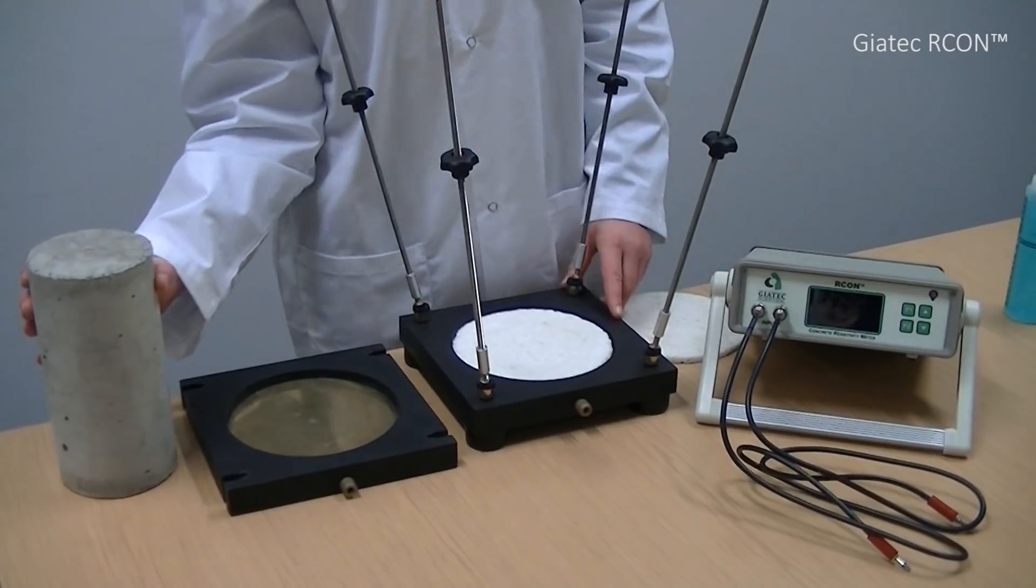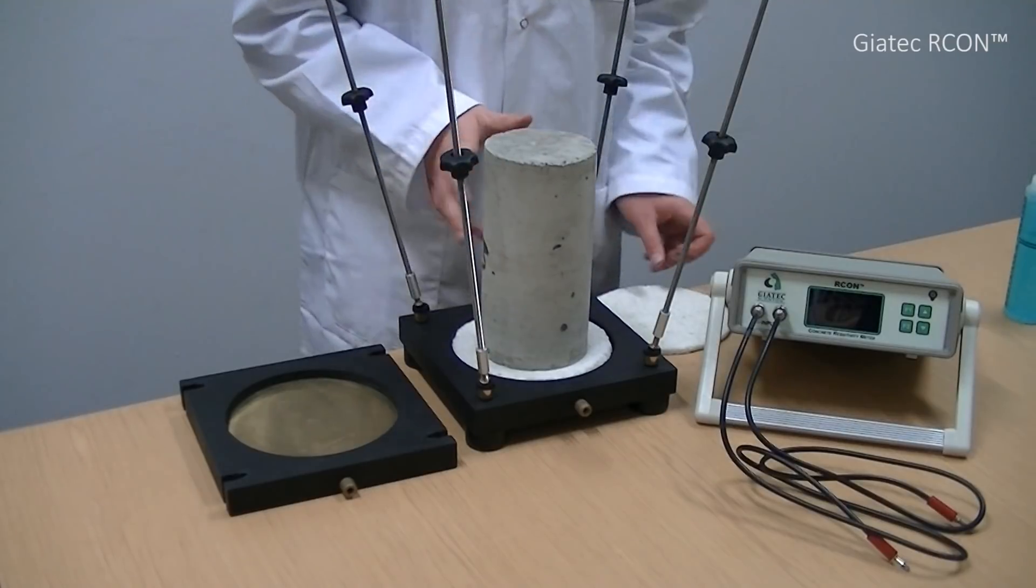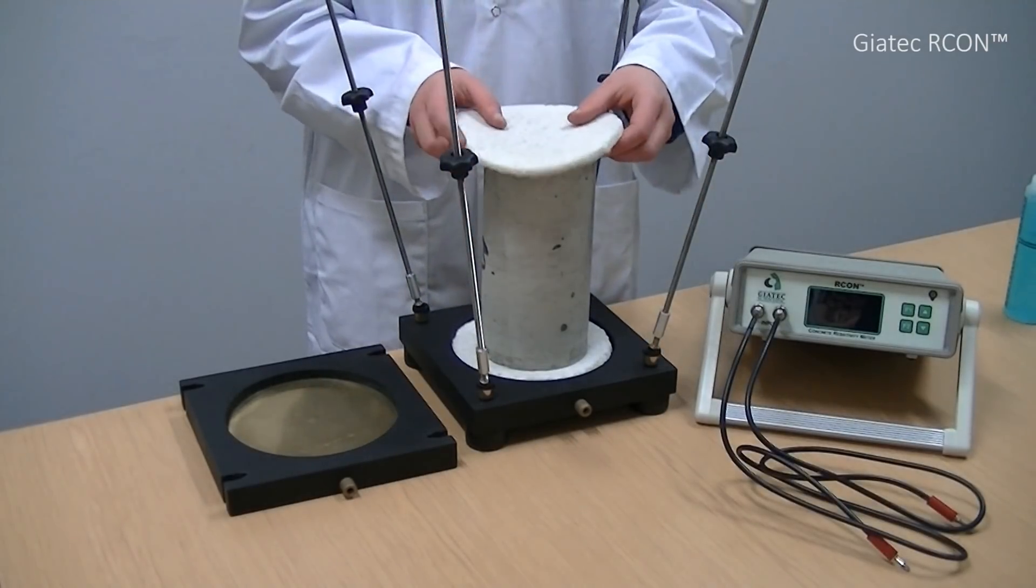Now, I can place the concrete sample on the sponge and place the second saturated sponge on top of the concrete sample.